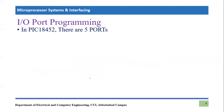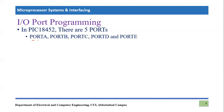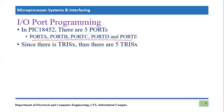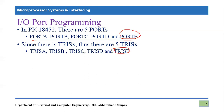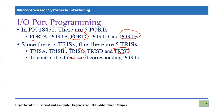In PIC18F452, there are five ports available: Port A, Port B, Port C, Port D, and Port E — five different internal SFR registers dedicated for input/output pins. Since there are five ports, there are five corresponding TRIS registers named TRISA, TRISB, TRISC, TRISD, and TRISE. For example, if one wants to configure Port A, they must use TRISA; to configure Port C, they use TRISC to control the direction of the corresponding port.